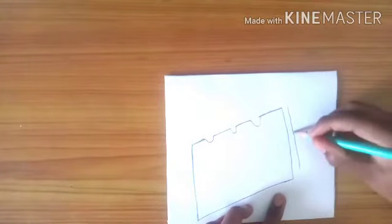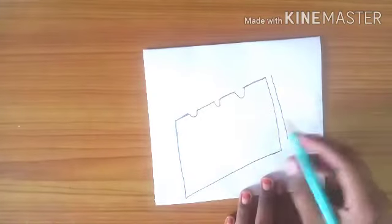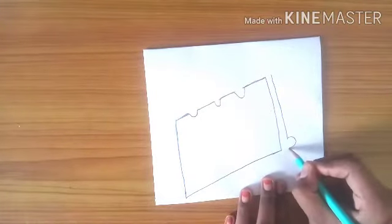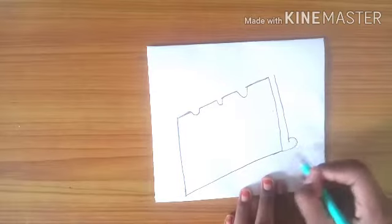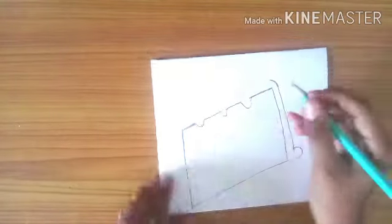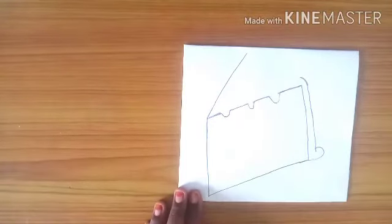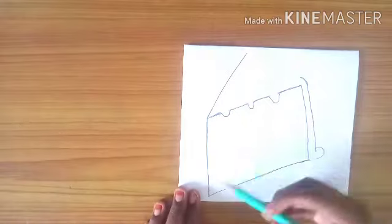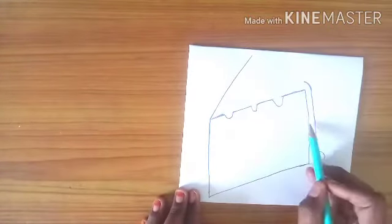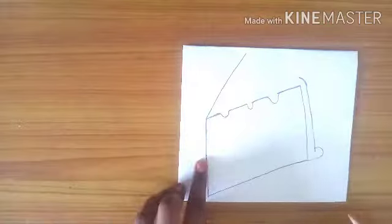Now draw a line near the cake, but don't draw it fully because we have to draw an oval-like structure there, because it shows that the cake's cream is oozing down. So now draw a line like which I am showing in the video. Now take the middle part of the cake and put a dot.